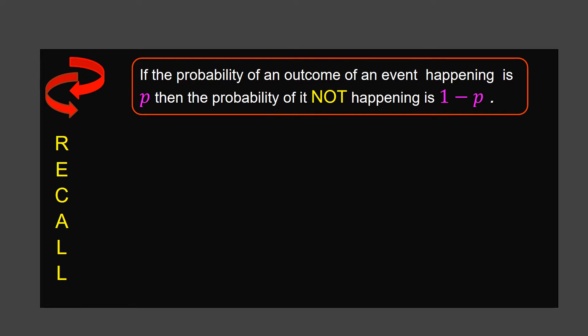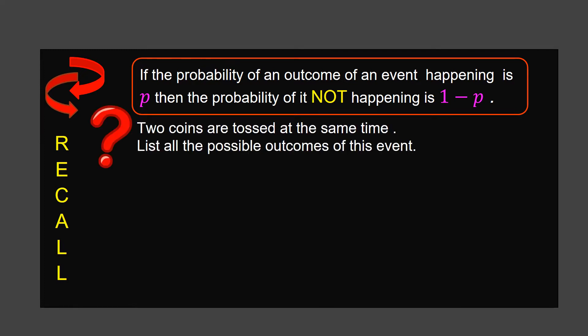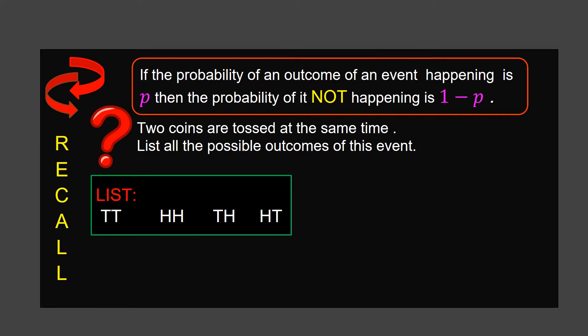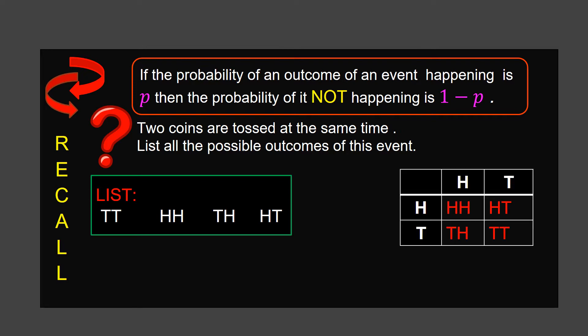Let me ask one question. Two coins are tossed at the same time. List all the possible outcomes of this event. I use T for tail and H for head. You might get tail and tail, head and head, tail and head, or head and tail. We can also use a possibility diagram, which displays all the possible outcomes in a table.